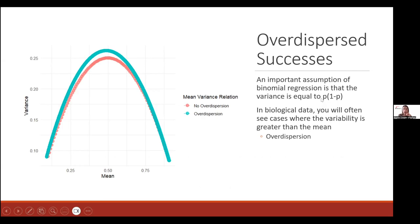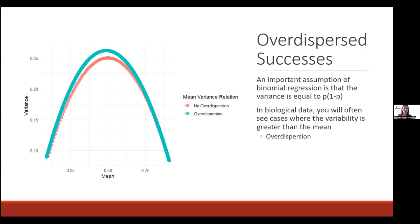The variance assumption states the variance equals mu times 1 minus mu, or P times 1 minus P. Given a mean of the binomial distribution, we expect the variance to follow a curve that peaks at a probability of 0.5 with a variance of 0.25 (since 0.5 × 0.5 = 0.25). Often we see overdispersion, where the variance is actually greater than expected by the model — that's something we have to look out for when fitting binomial regression models.